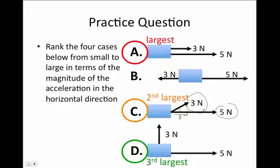The third largest acceleration in the horizontal direction will come in answer D. In this case, the 5 newton force is again pulling to the right. There's a 3 newton force in this case, but it's pulling straight up. And so this does nothing in the horizontal direction. So in this case, the net force in the horizontal direction is just 5 newtons.